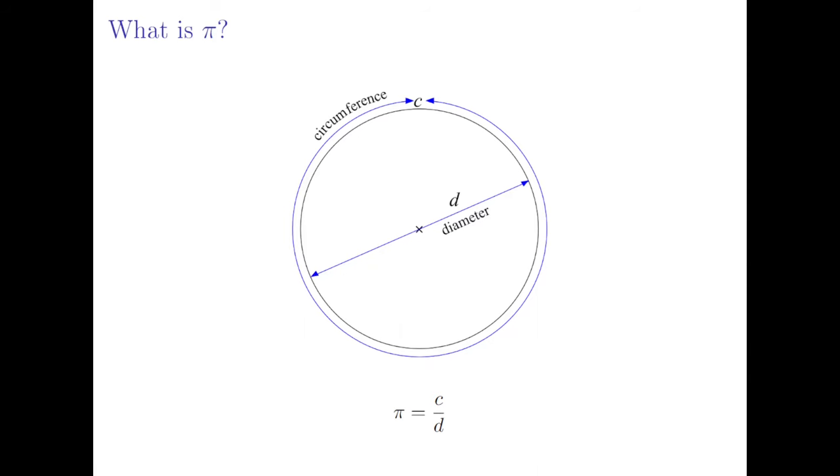It's the mathematical constant approximately equal to 3.14 that we define as I'm doing here as the circumference of any circle divided by the diameter of that circle. So you take any circle, take its circumference, divide that by its diameter, and that will give you pi always.